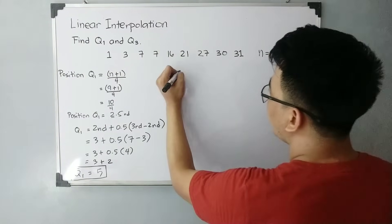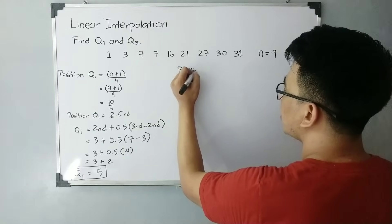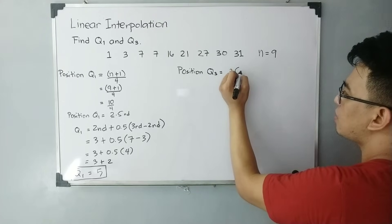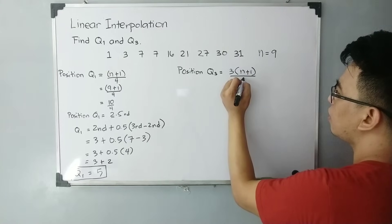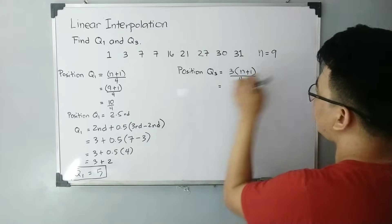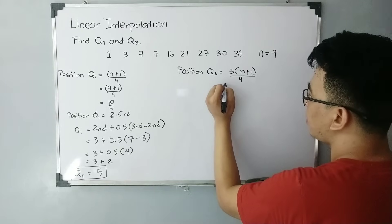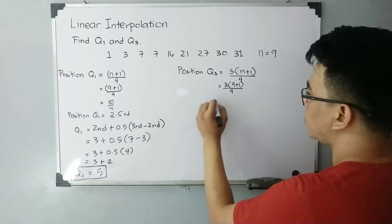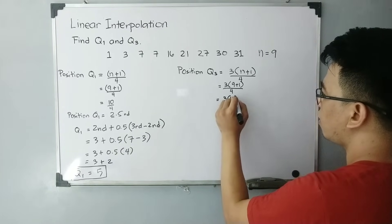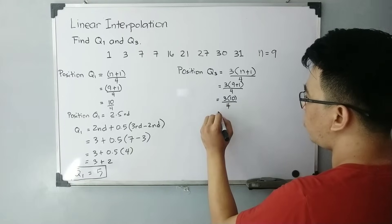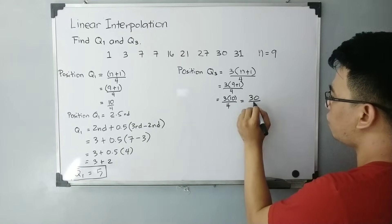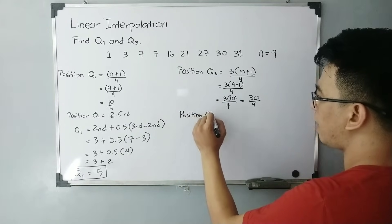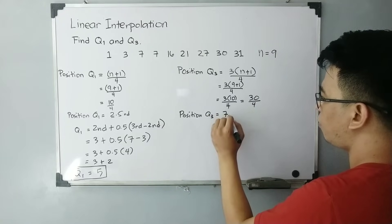Let's move on with quartile 3. First, find the position using the formula 3(n + 1) / 4, with n = 9: 3(9 + 1) / 4 = 30 / 4 = 7.5. The position of quartile 3 is 7.5.